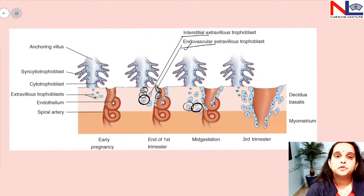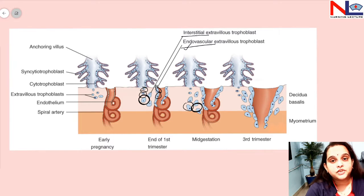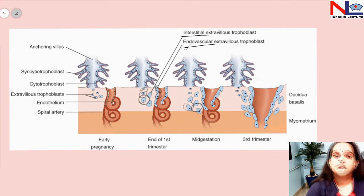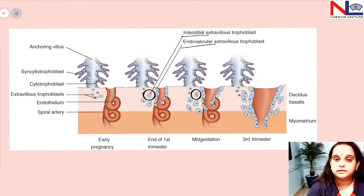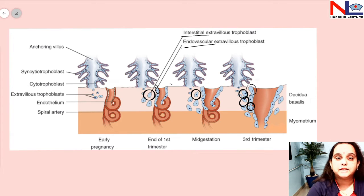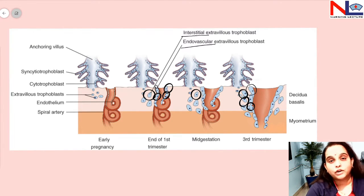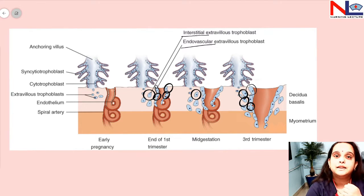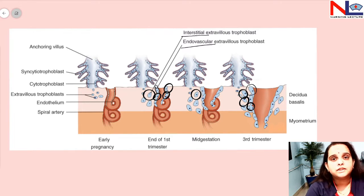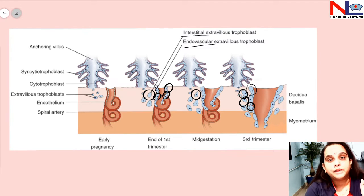There are two waves of invasion. The first wave occurs within 12 weeks of gestation, where cytotrophoblastic cells invade the vascular system. The interstitial extravillous trophoblastic cells surround the spiral arteries, while the endovascular extravillous trophoblasts invade inside the spiral arteries, forming a cellular plug. The cells then undergo apoptosis — programmed cell death — and the endothelial cells, smooth muscle, and connective tissues lining the vessels are replaced by fibrinoid tissue and a cytotrophoblastic layer.